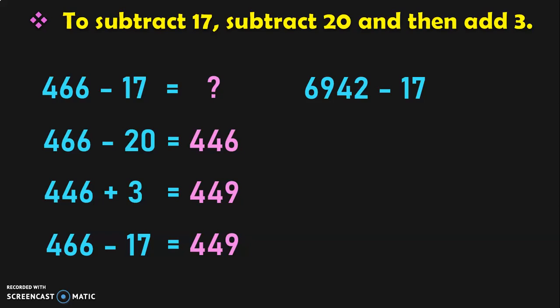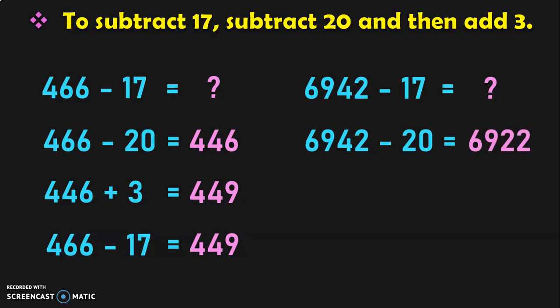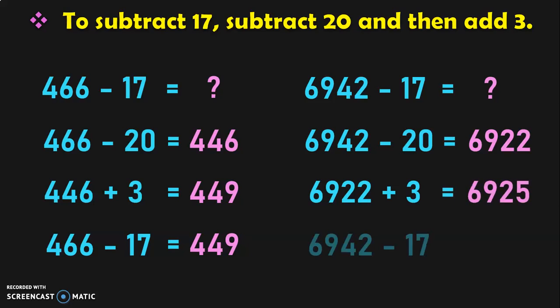Let us do the 4-digit example. 6,942 minus 17 is equal to what? 6,942 minus 20 is easier to do, which gives you 6,922. Now, 6,922 plus 3 is equal to 6,925. So, the answer for 6,942 minus 17 is equal to 6,925.